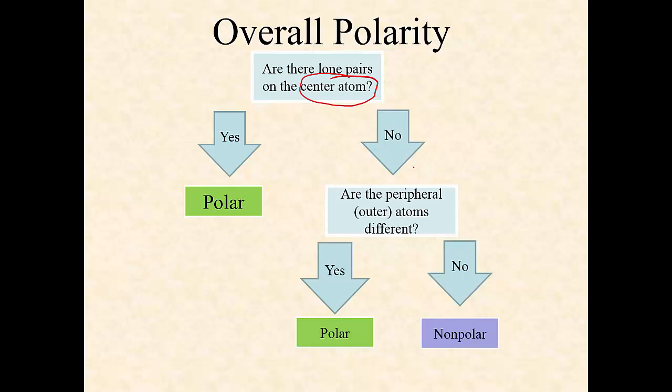If there aren't any lone pair, then you're going to have to look at the outer—the peripheral means your outer, the branches. If they are different, that means it's polar because you've lost your symmetry. This means no symmetry. If they are all the same, this is going to be a non-polar molecule.